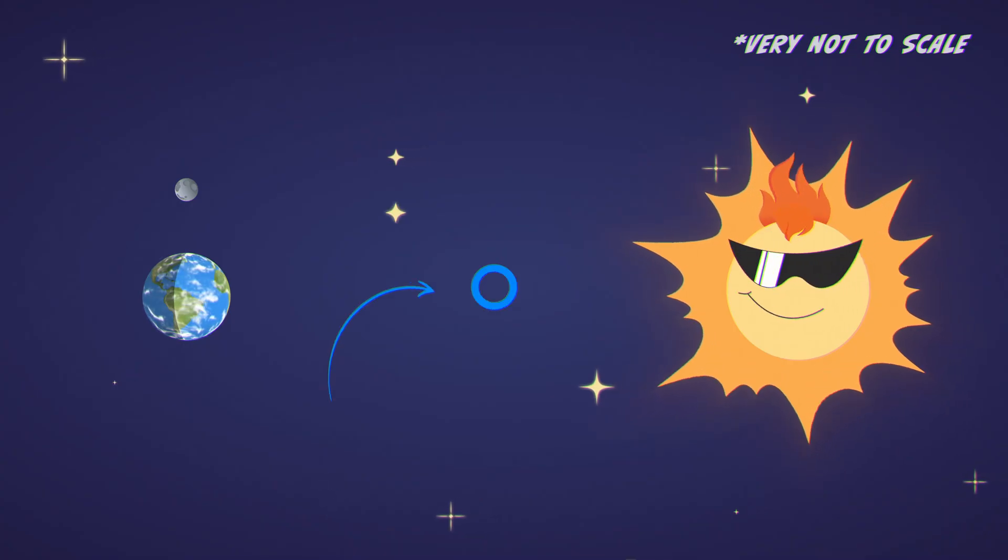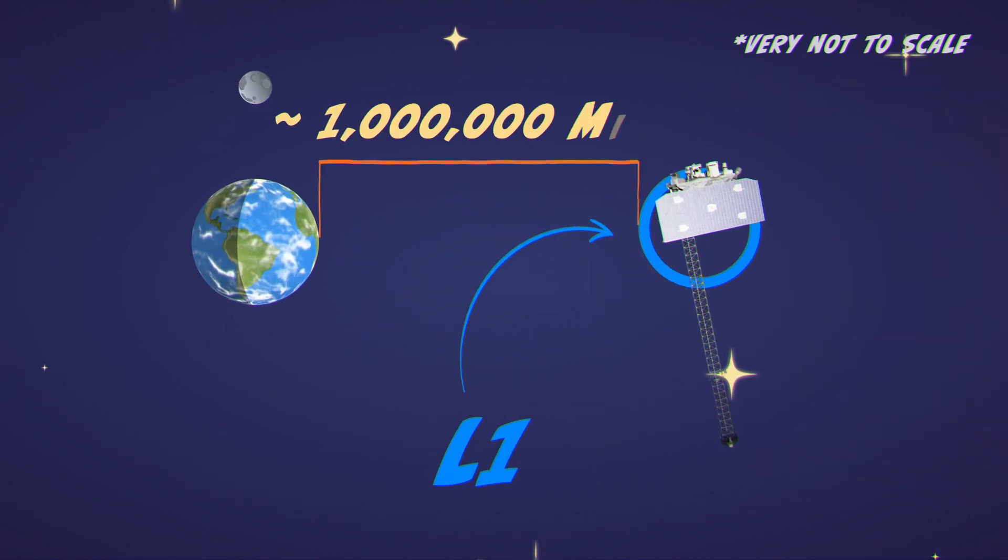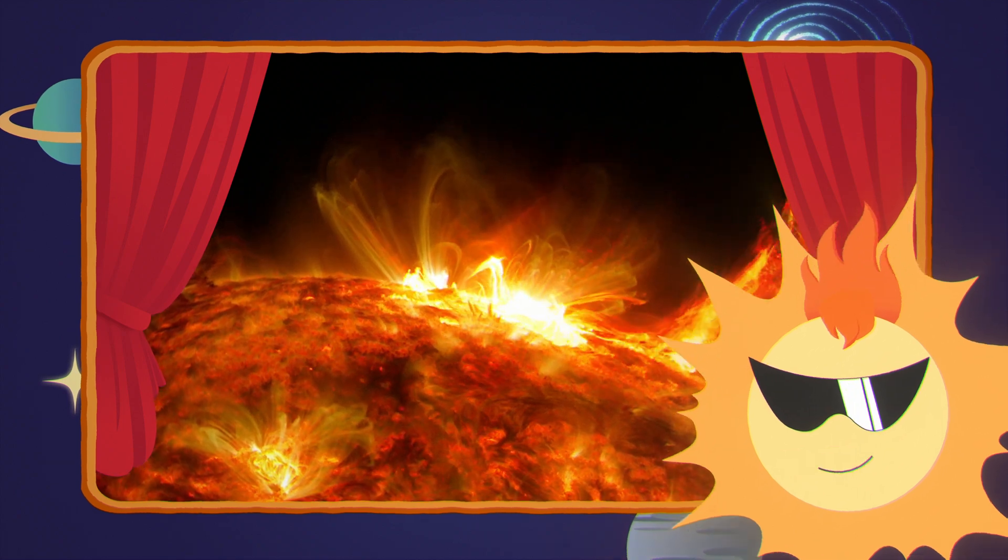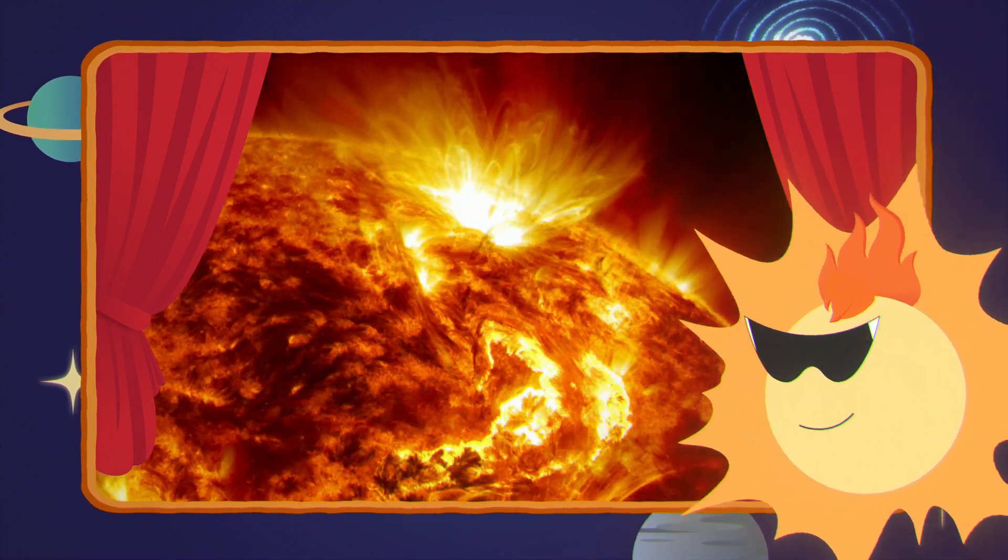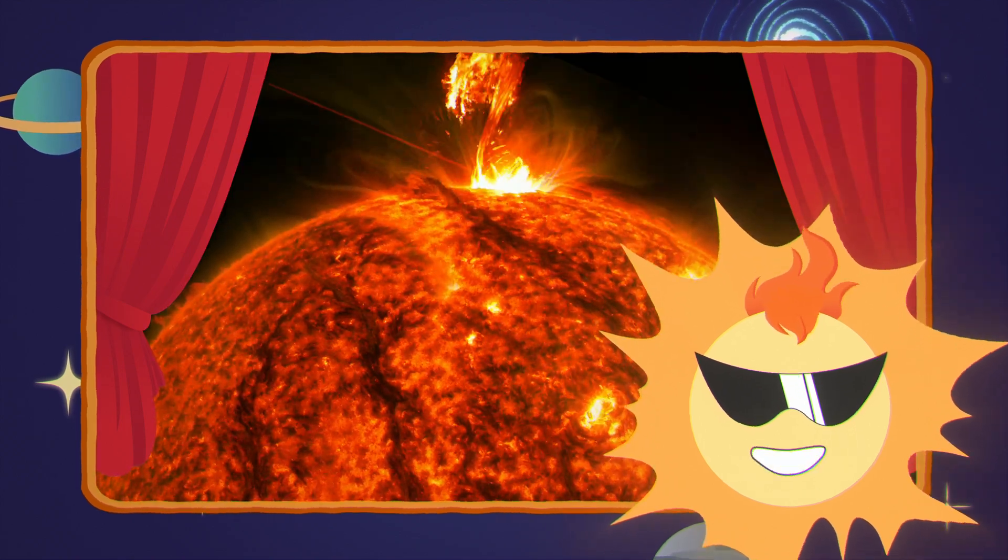SWIFO L1 sits in a super special spot called Lagrange 1, or L1 for short, about a million miles from the Earth. That's the perfect front row seat to observe every amazing thing I do, like epic explosions of energy from my surface, part of what we call space weather.